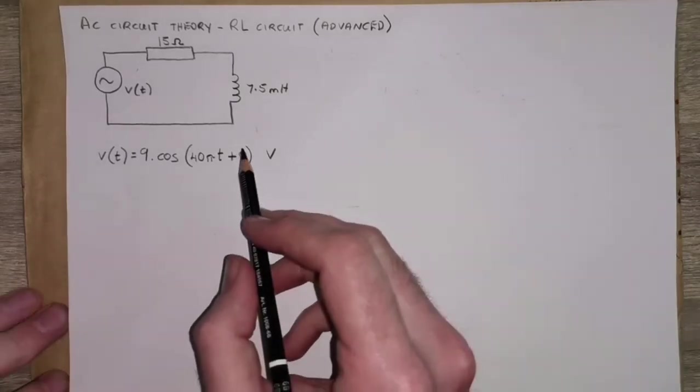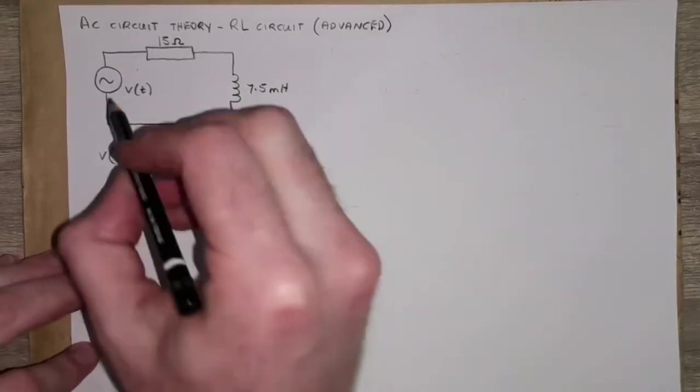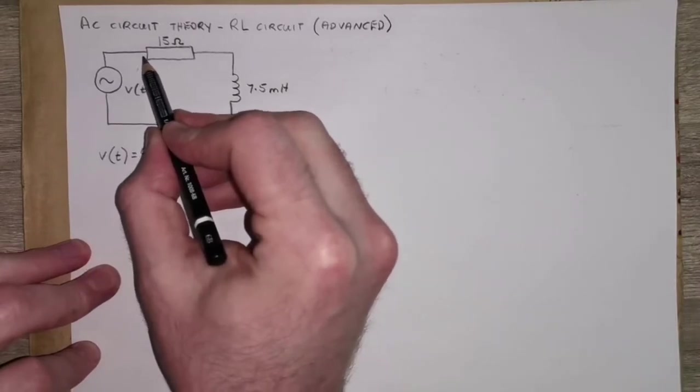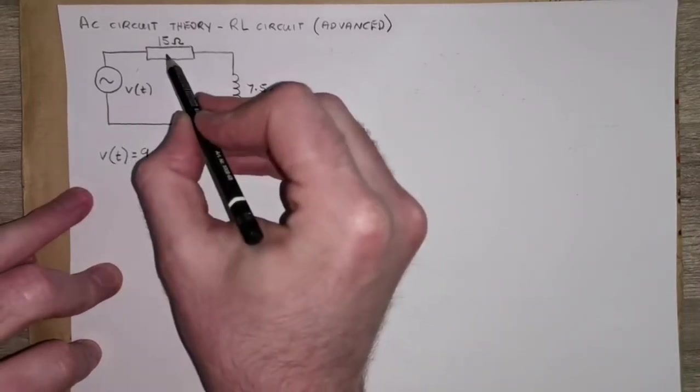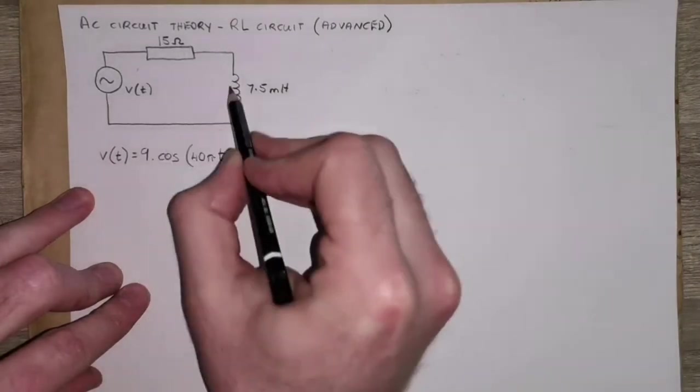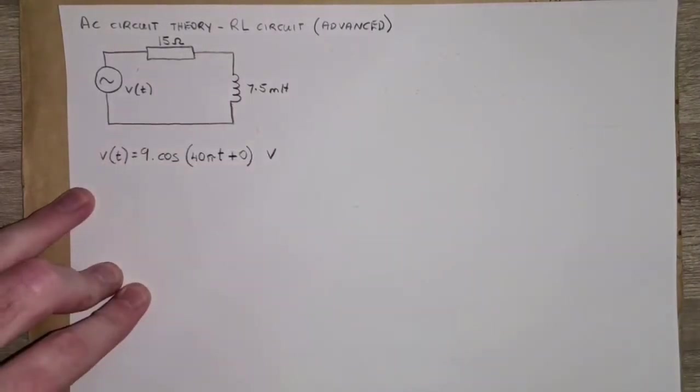Now in previous questions we've dealt with this scenario where we have an RL circuit, that's a resistor inductor, connected in series with an AC voltage source.